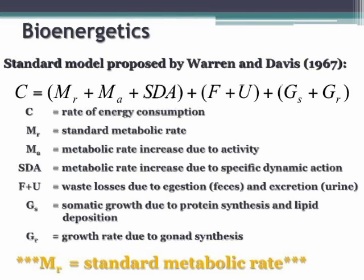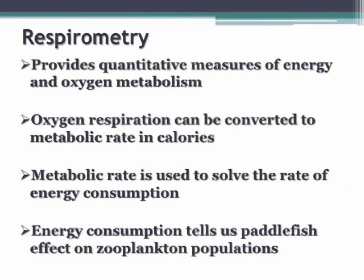In the model, C is our rate of energy consumption. M-sub-R is our standard metabolic rate. M-sub-A is our metabolic rate increase due to specific dynamic action. F plus U represents waste losses due to digestion and excretion. G-sub-S is somatic growth due to protein synthesis and lipid deposition. G-sub-R is our growth rate due to gonad synthesis. The part of this equation we're focusing on is M-sub-R, our standard metabolic rate.